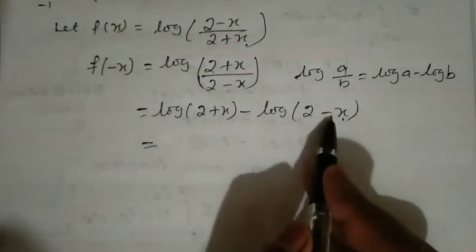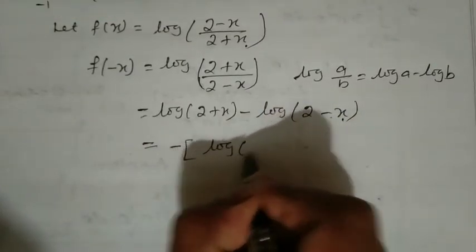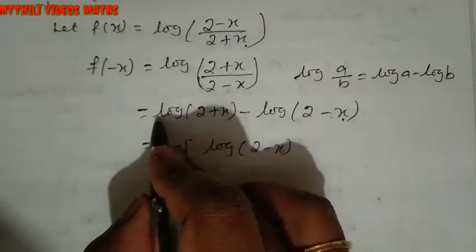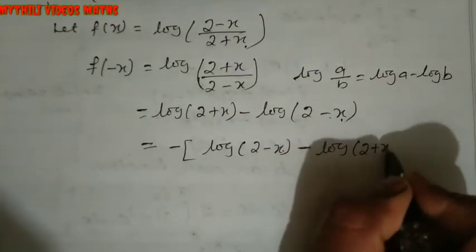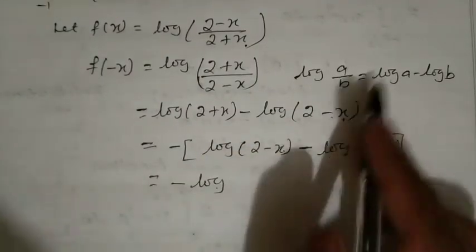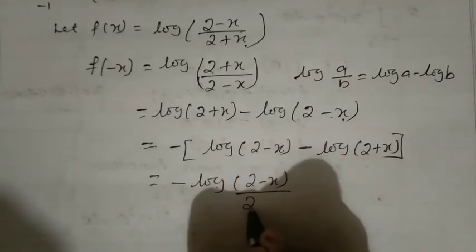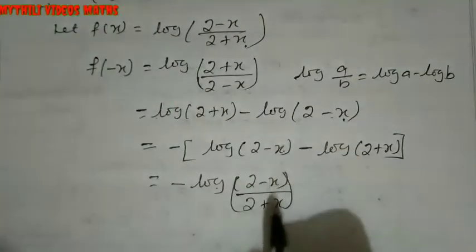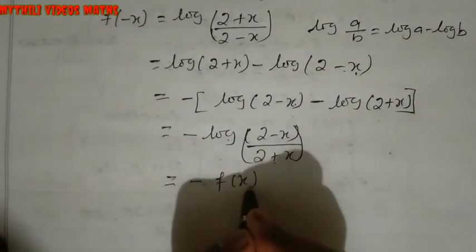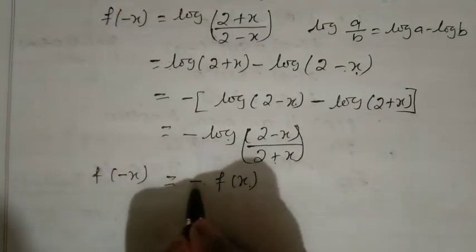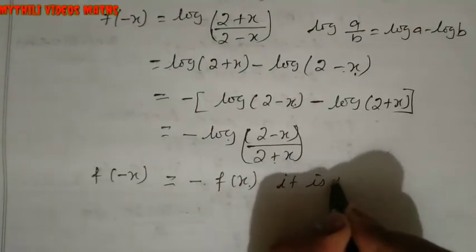We can take the minus sign outside. Using the logarithm property log A minus log B equals log(A/B): f(minus x) equals minus log(2 minus x) plus log(2 plus x), which simplifies to minus log((2 minus x)/(2 plus x)). This equals minus f(x).